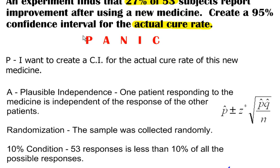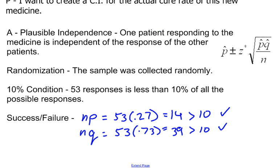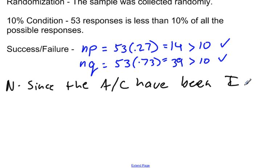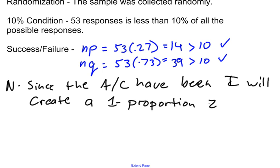So we've got our P, which is our parameter statement. We've checked our assumptions and conditions. And we're in good shape. Now we go to N, which is name the test, or name the, in this case, the interval that we are going to create. So since the assumptions and conditions have been met, I will create, in this case, I'm creating a one proportion Z interval.